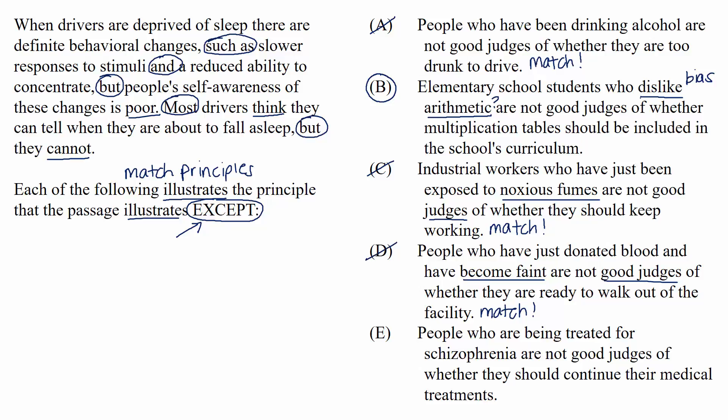Choice E: people who are being treated for schizophrenia are not good judges of whether they should continue their medical treatments. This is our final matching principle. The physical condition is schizophrenia, and it's physically preventing people from being able to make a good decision about whether they should continue their medical treatments.